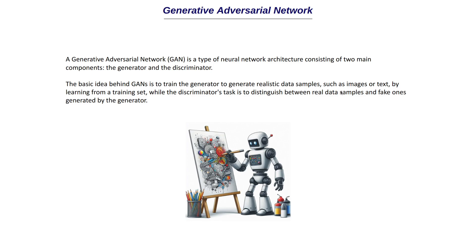GANs are used to generate predominantly images, but these can also be used to generate text or music and similar data. It is used to generate realistic data samples by learning from a training set. The discriminator's task is to distinguish between real data samples and fake ones generated by the generator. So a GAN has two parts: the generator and the discriminator. The generator tries to generate images and the discriminator tries to classify whether a particular image is real or not.